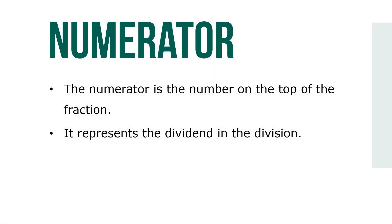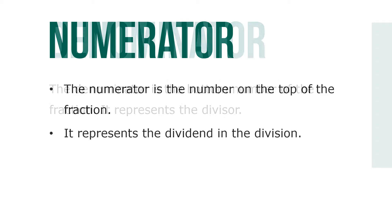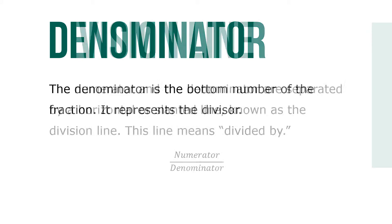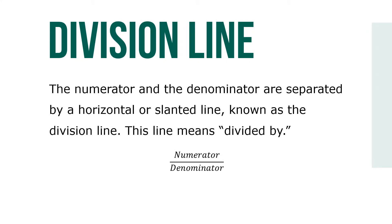The numerator is the number on the top of the fraction. It represents the dividend in the division. The denominator is the bottom number of the fraction. It represents the divisor. The numerator and the denominator are separated by a horizontal or slanted line known as the division line. This line means divided by.